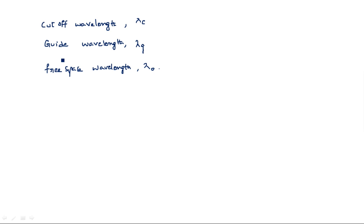Free space wavelength is the wavelength of any wave that travels in free space, that is, without any guiding structure. Cutoff wavelength is about the maximum limit — it is the maximum wavelength beyond which the wave cannot travel inside the rectangular waveguide. That is the maximum wavelength. Now let us see the definition of guide wavelength.